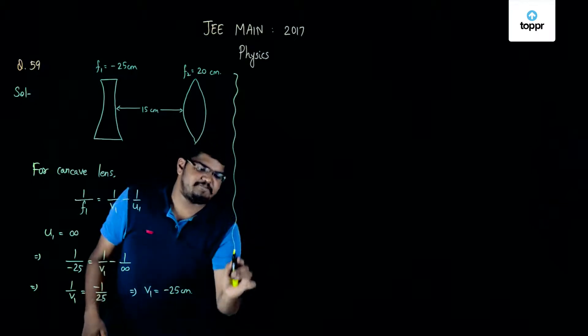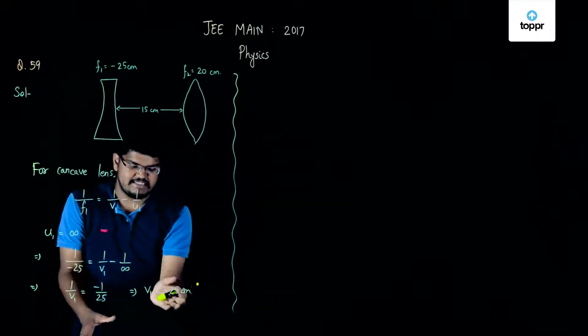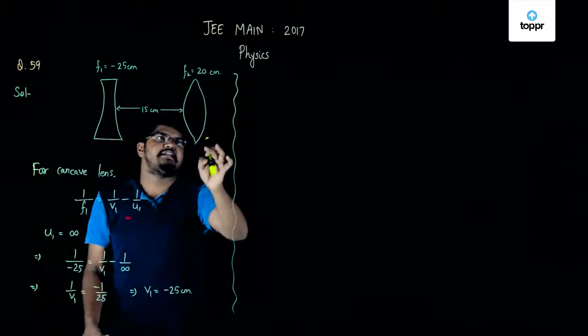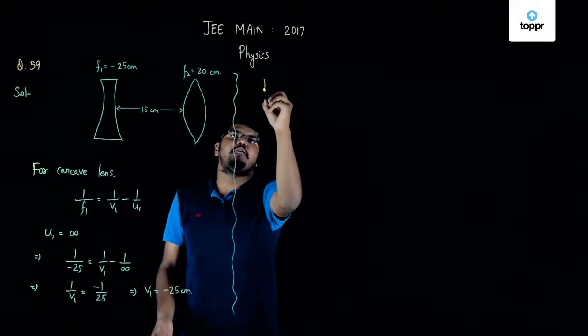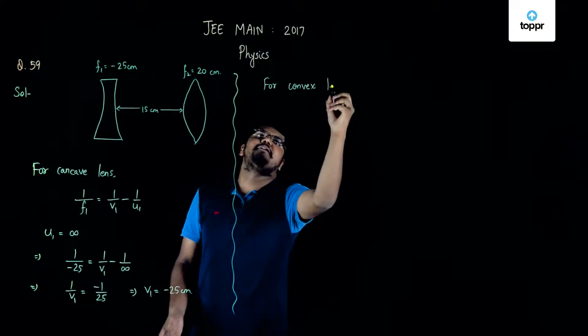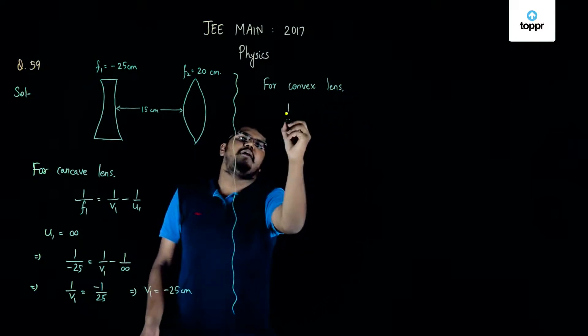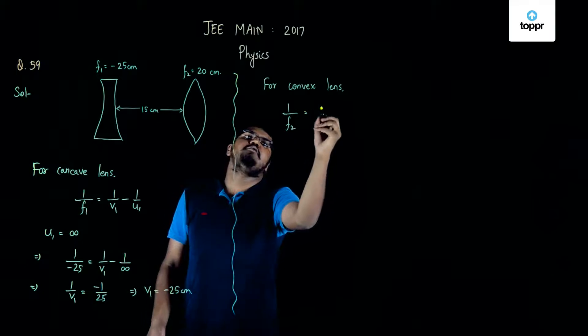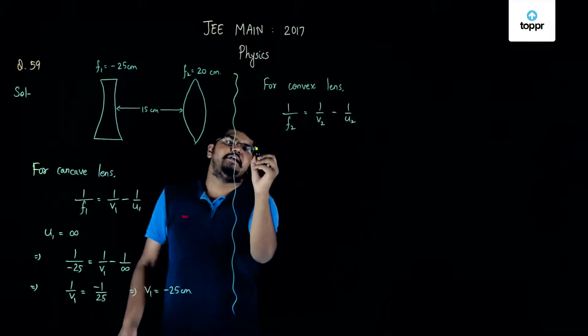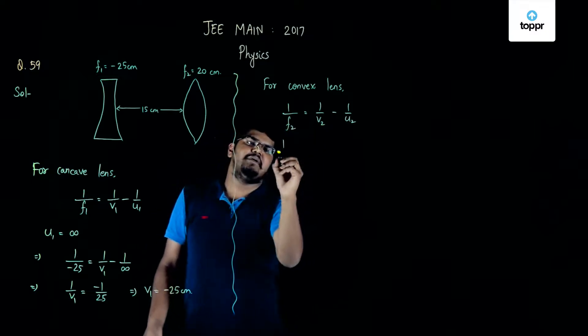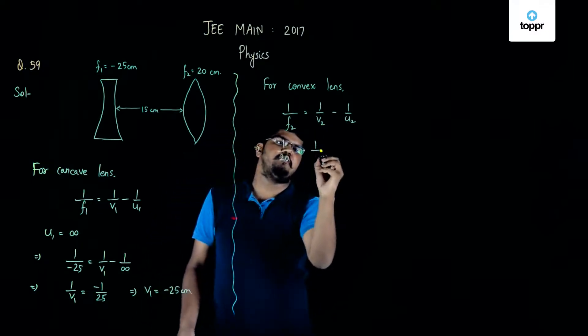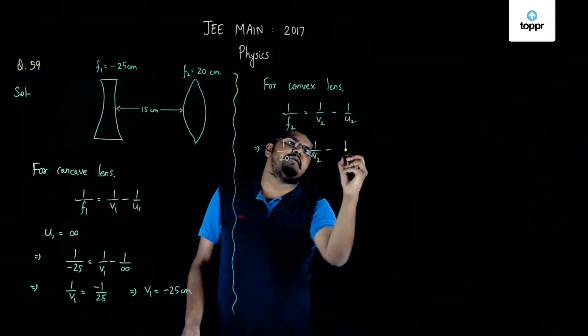Now, we can consider this particular length as the object distance along with this 15 centimeter for this converging lens and we can say that for convex lens if we apply the lens formula again then 1 upon f2 will be equal to 1 upon v2 minus 1 upon u2. We already know that the value of f2 is 20 centimeter. So, 1 upon 20 is equal to 1 upon v2 minus 1 upon...